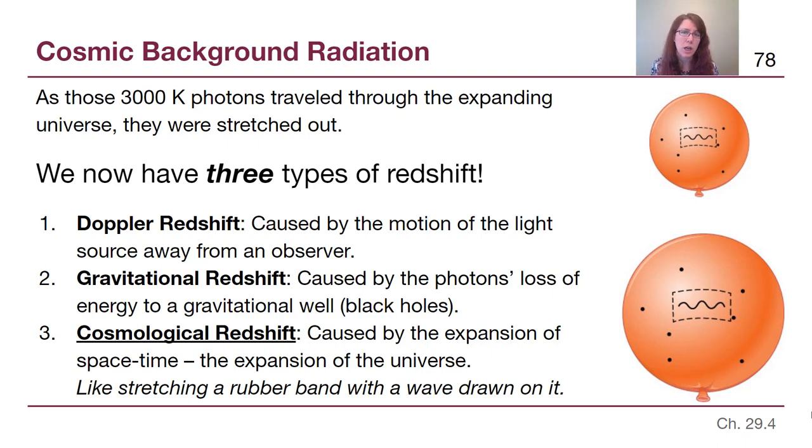And now we have cosmological redshift. This new phrase is underlined here. This is when photons that have been traveling for long distances are stretched out because the universe is expanding. It's kind of like stretching a rubber band that has a wave drawn on it or our balloon analogy here. There is no opposite. There is no cosmological blue shift because that would involve photons going through a collapsing universe and we don't have that. So in astronomy we have three types of redshift, but only one type of blue shift.